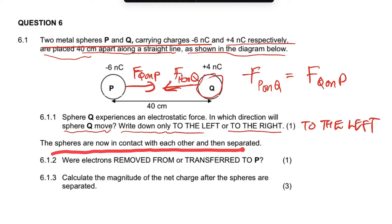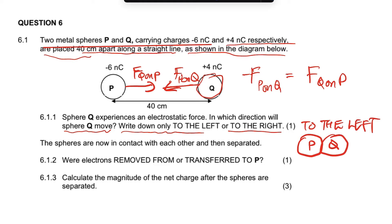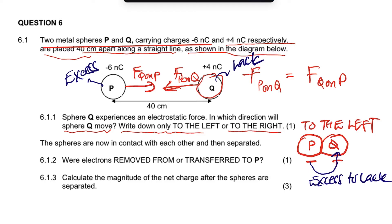Now the spheres are brought into contact with each other and then separated. When these two spheres are in contact, this is P — negatively charged — and Q — positively charged. There is a transfer of electrons. The negatively charged sphere has an excess of electrons, and the positively charged sphere has a lack of electrons. So the transfer of electrons always goes from the negatively charged sphere to the positively charged one — from excess to lack. Therefore, the electrons were removed from P.